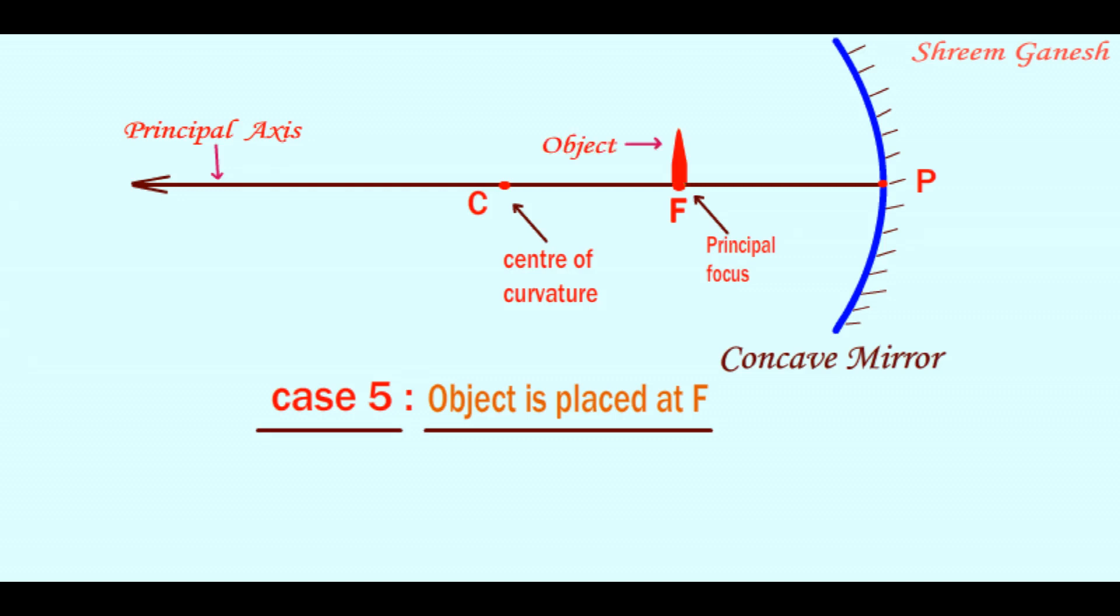Let us consider an object O is placed opposite to a concave mirror at its principal focus. Let us consider a point A on the object O.